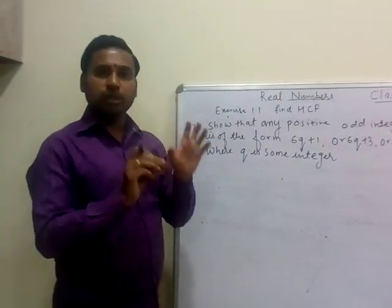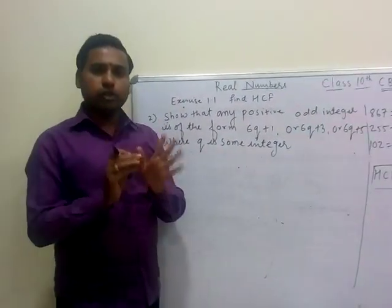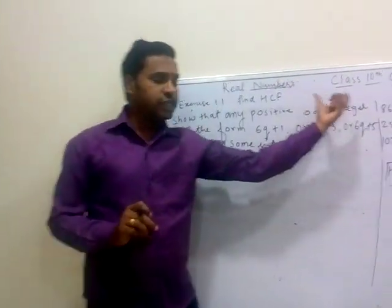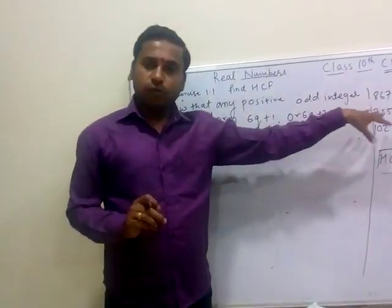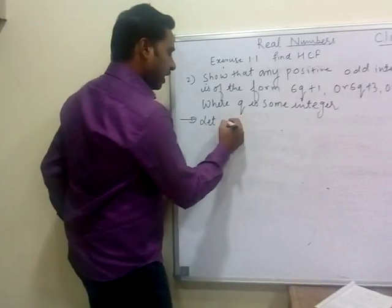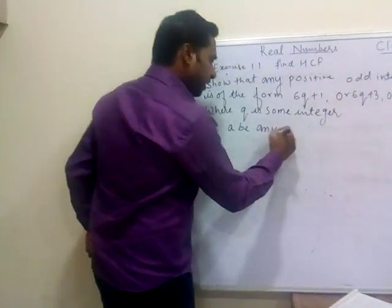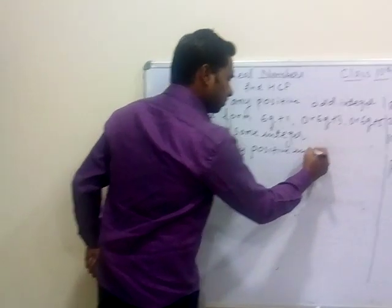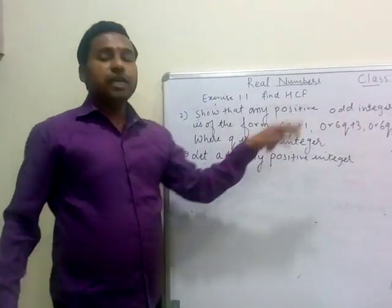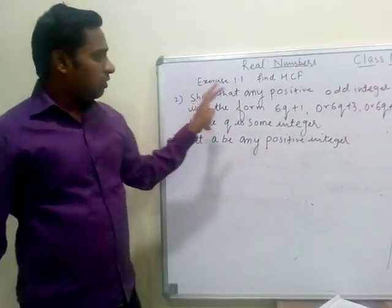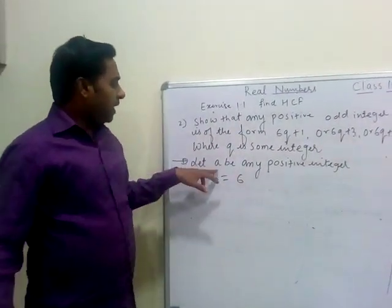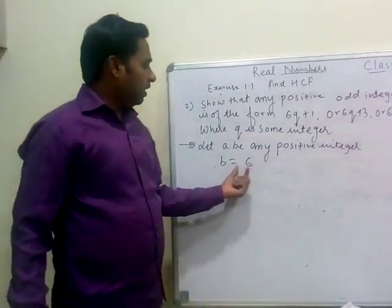First, understand what the question is asking — it says any positive odd integer must be in one of these three forms. Let A be any positive integer. We take B = 6. Now from Euclid's division lemma, we know that the remainder is always less than B. So if B = 6, the possible values of remainder R are 0, 1, 2, 3, 4, or 5.